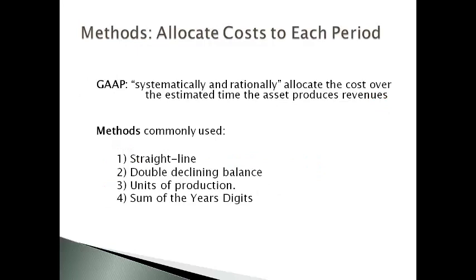A company must allocate the cost of using long-term assets to each period the asset is used to produce revenues. GAAP requires the amount to be systematically and rationally allocated. Over time, accountants have developed four methods that are commonly used to estimate the expense for each period, and we will discuss the use of each of these four methods.